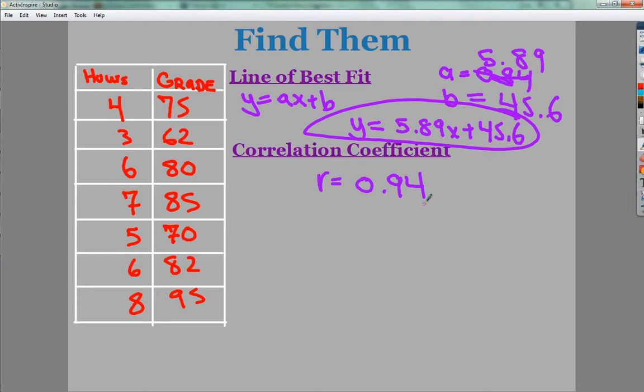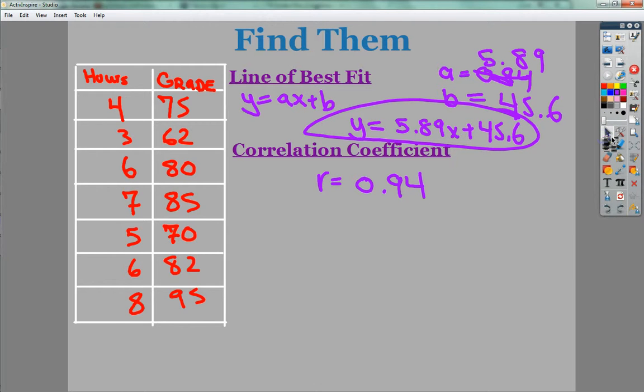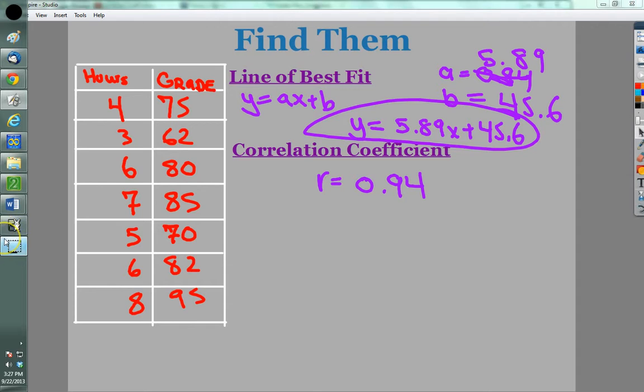I can say not only that the correlation between the two pieces of data is positive, but it's also pretty linear because 0.94 is pretty close to the number. But that's it. Correlation coefficient, line of best fit, all in the TI-84, and a little explanation of the number.